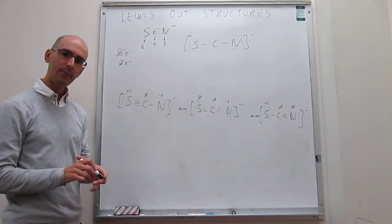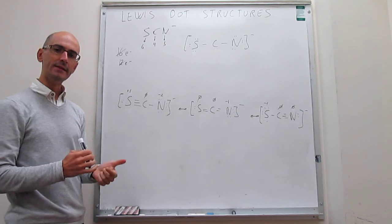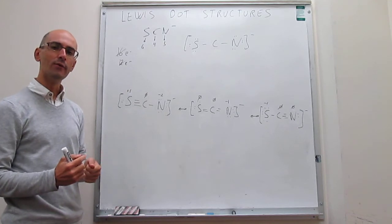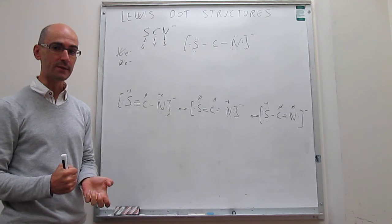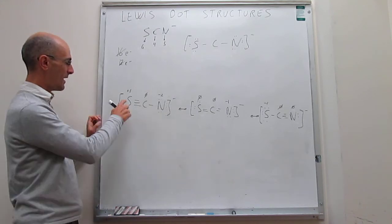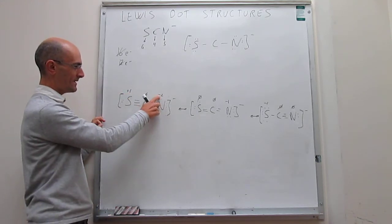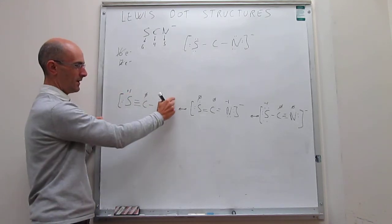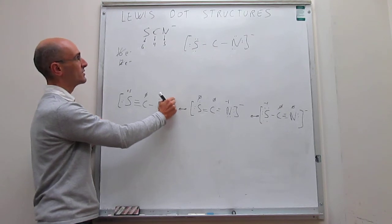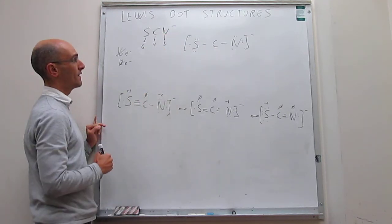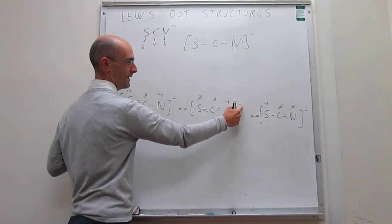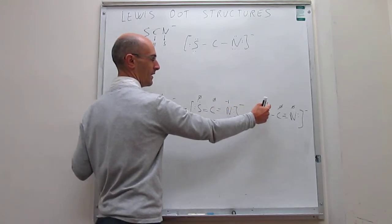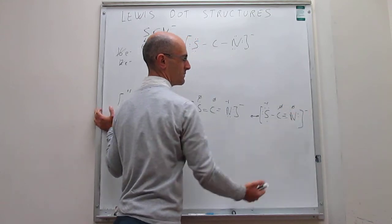Something important happens here: the sum of all of the formal charges is identical to the total charge of the species. For the first structure, plus one plus zero plus minus two equals minus one — exactly the charge of the thiocyanate ion. The second structure sums to minus one, and the third also sums to minus one — each agrees with the ion's total charge.